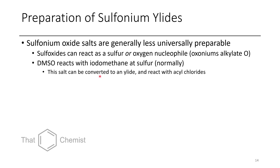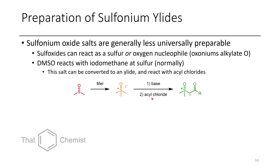Once you get the salt, you can treat it with a base to get your ylid, and then acylate that. This is a really good nucleophile — N of about 21 — so it will easily react with an acyl chloride. As long as you control stoichiometry and add one equivalent, you'll have a good sulfonium ylid. This is one way to make a sulfonium oxide ylid that has been seen in the literature in several instances.